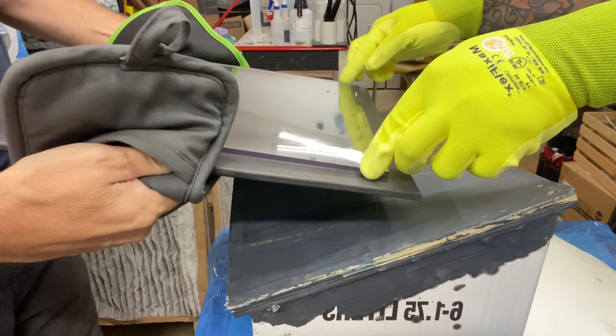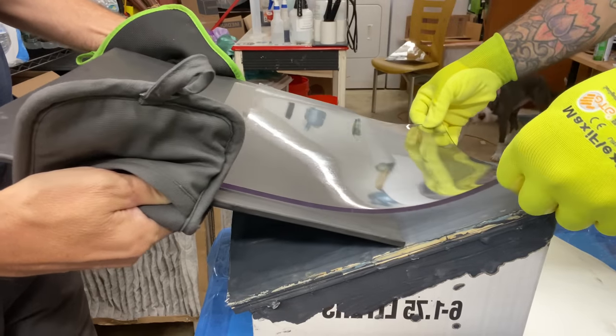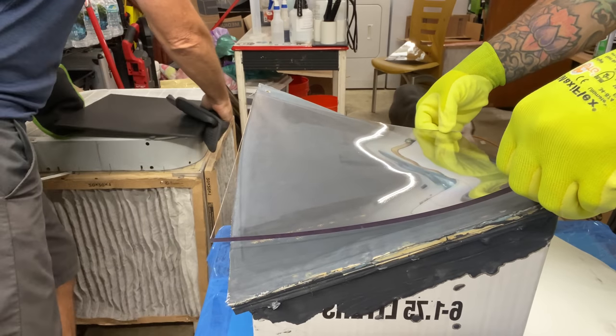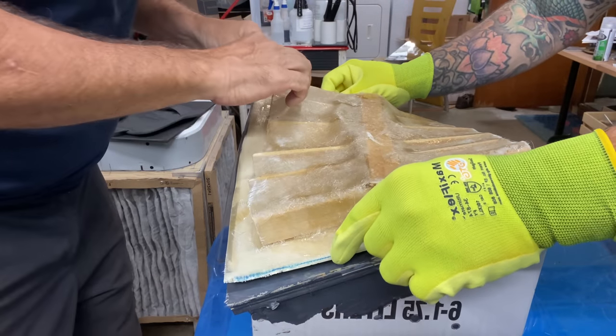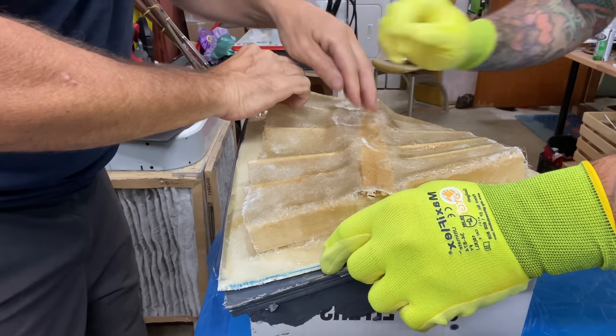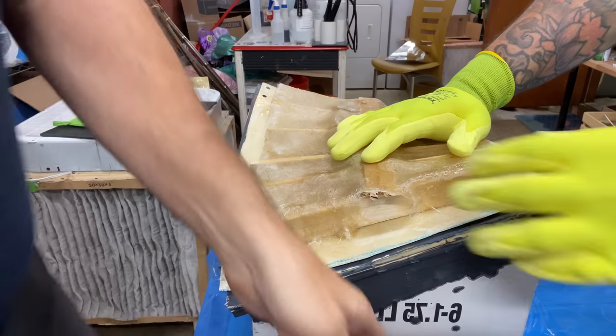Then by heating sheets of PETG above the plastic transition temperature, they could lay that over the top and then clamp it down with a similarly manufactured top plate. Once cooled, the sheet of PETG would be smoother than the surface it cooled on.